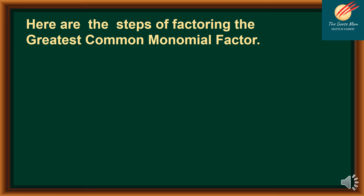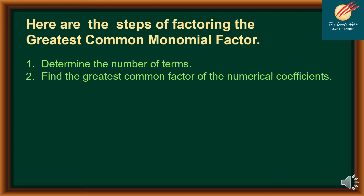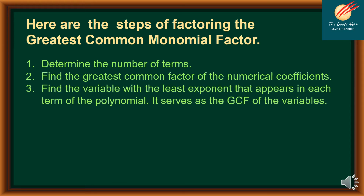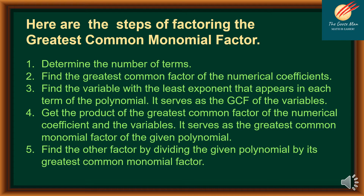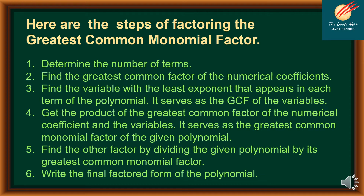Here are the steps of factoring by greatest common monomial factoring. Number one is to determine the number of terms. Second is find the greatest common factor of the numerical coefficients. Third, find the variable with the least exponent that appears in each term of the polynomial — it serves as the GCF of the variables. Number four is get the product of the GCF of the numerical coefficient and the variable; it serves as the greatest common monomial factor. Number five is find the other factor by dividing the given polynomial by its greatest common monomial factor. And finally, write the final factored form of the polynomial.